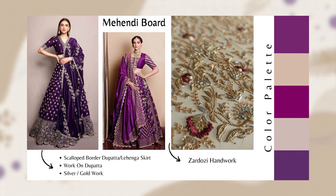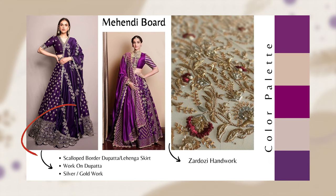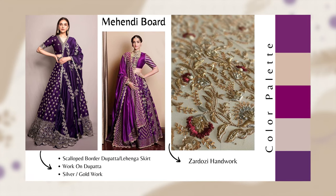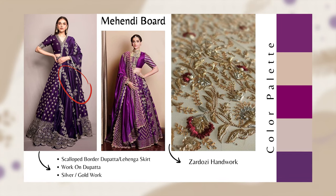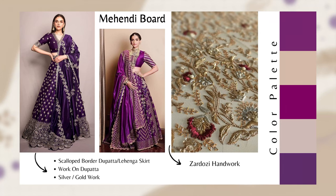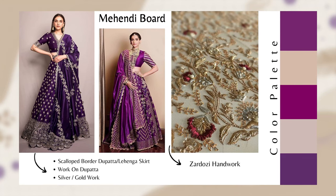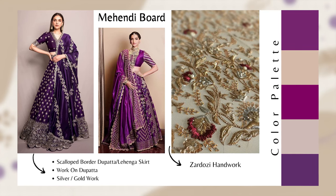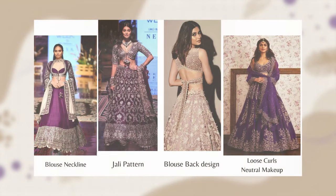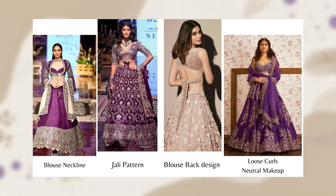The first picture is of Aditi Rao. I have written the elements I liked — like the scallop border for the dupatta or the lehenga skirt as well. Next is the work on the dupatta, then silver or gold work. If your preference is silver, you can write that you want this design but in silver or gold — whatever you're thinking, just write it. For me, my preference was either silver or gold. Next, I wrote that I want this kind of zardozi work. White pearl work would also look good.